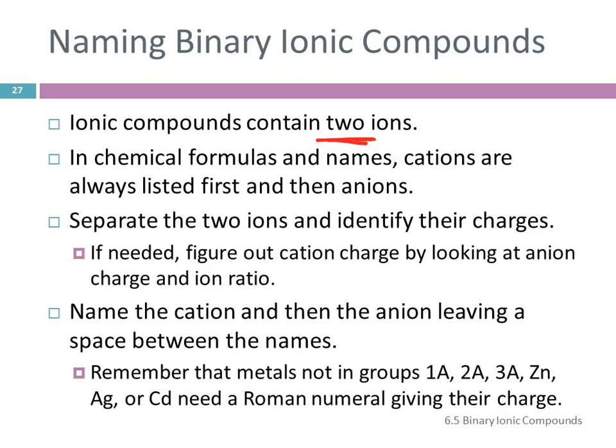To name these guys, what you have to do is you first have to identify the two ions. Separate them. Write their charges. Now, sometimes you need to figure out what the charge is. If you've got a transition metal, one that needs a Roman numeral, you're not going to know what the charge is just by looking at the periodic table. And so then what you do is you have to figure it out by looking at the charge on the anion and looking at the ratio of those two ions in the formula unit. And we'll do some examples to show you how to do that. So once you've identified the two ions with their charges, then you write the name for the cation and then the name for the anion, and you're going to leave a space in between.